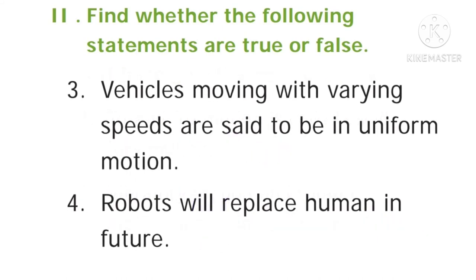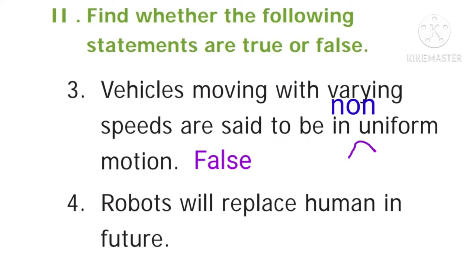Third: vehicles moving with varying speeds are said to be in uniform motion. Answer: false. The correct statement is — vehicles moving with varying speeds are said to be in non-uniform motion. Fourth: robots will replace humans in the future. Answer: false. The correct statement is — robots will not replace humans in the future.